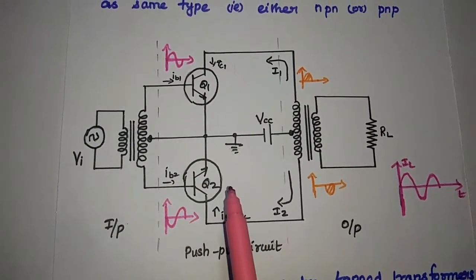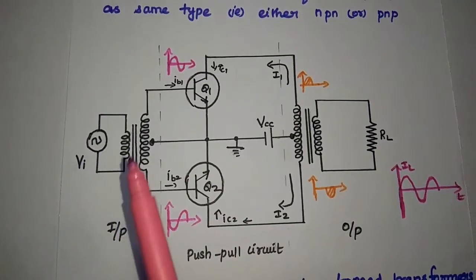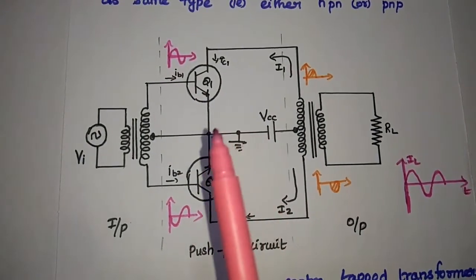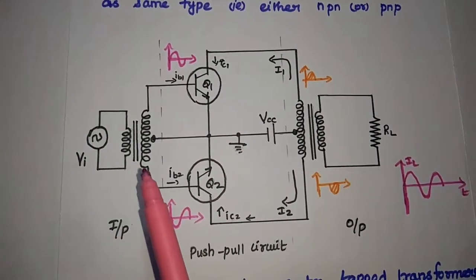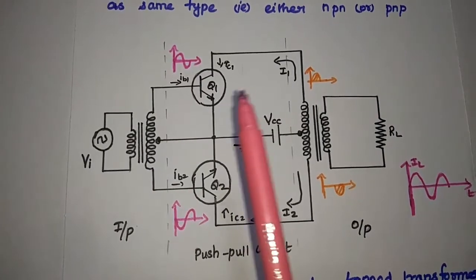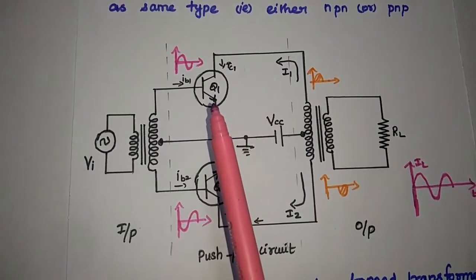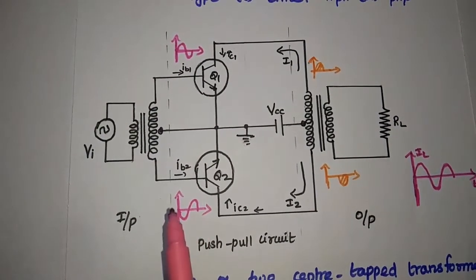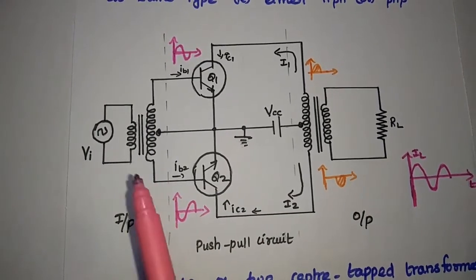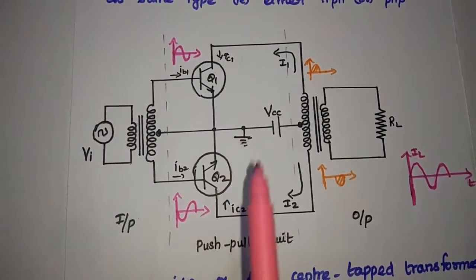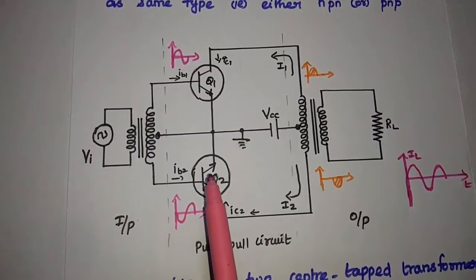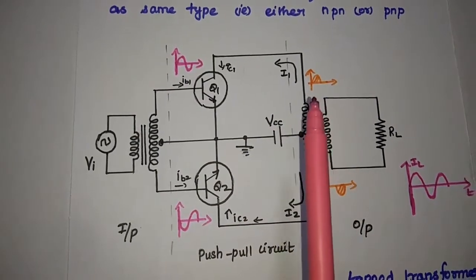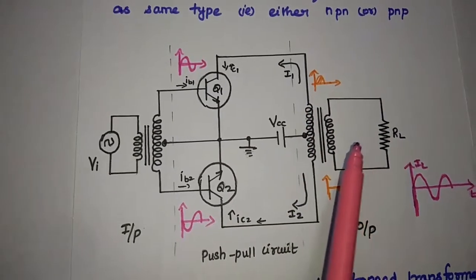These two signals will drive the transistors. Whenever we give an AC input signal for the first positive half-cycle, Q1 becomes forward-biased and starts conducting — it is positive, so it is forward-biased. But for Q2, the signal is 180 degrees out-of-phase, so it is the negative one and Q2 is in the off-condition. For the positive half-cycle, Q1 starts conducting and Q2 is in off-condition, meaning IB2 is equal to 0 and only IB1 is present. This produces collector current IC1, and we get the output across the upper part of the primary winding of the output transformer.